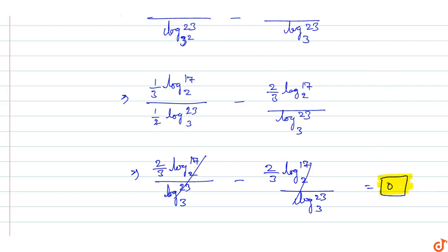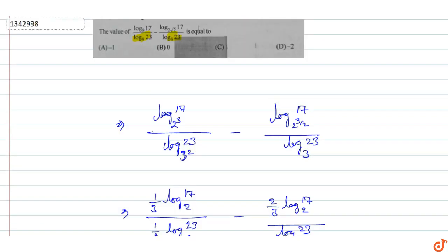The value of log 17 base 8 upon log 23 base 9, minus log 17 base 2 root 2 upon log 23 base 3, is equal to 0. This means option B is the correct answer for this question.